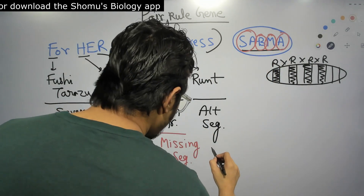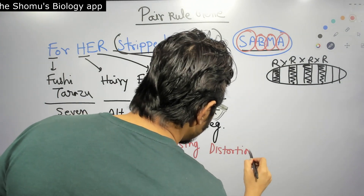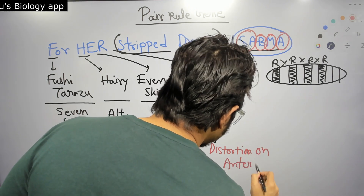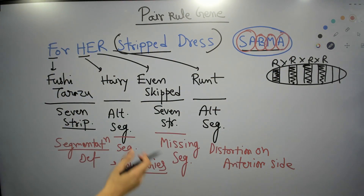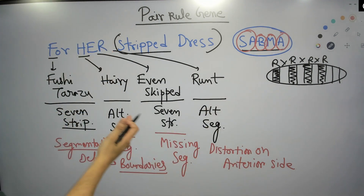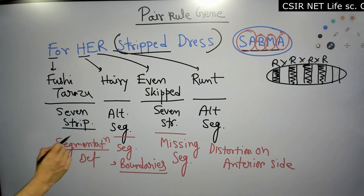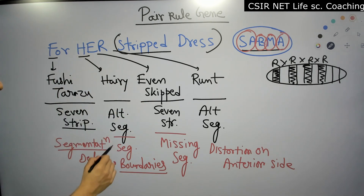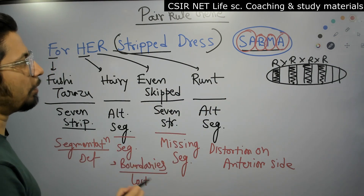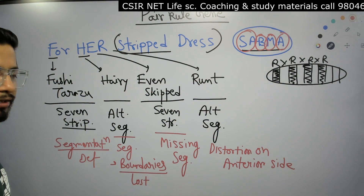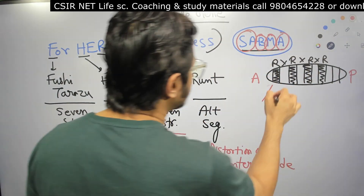A for Runt stands for anterior distortion. If there is a mutation in Runt, there will be distortion on the anterior side of the embryo. So to summarize: mutation in Fushi tarazu causes segmentation defects; mutation in Hairy causes loss of segment boundaries; mutation in Even skipped causes missing segments; and mutation in Runt causes distortion on the anterior side of the embryo.